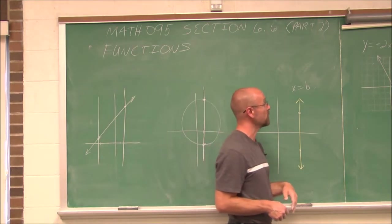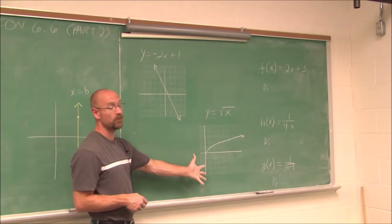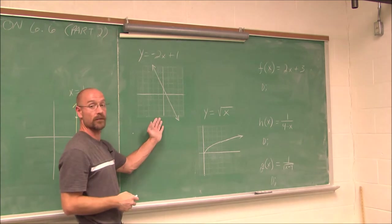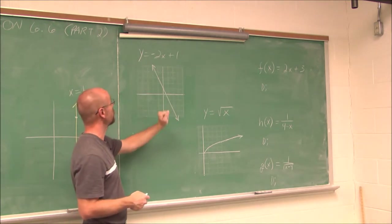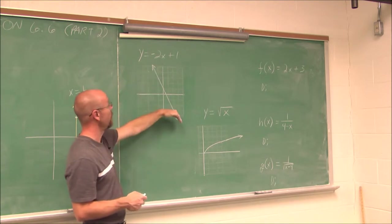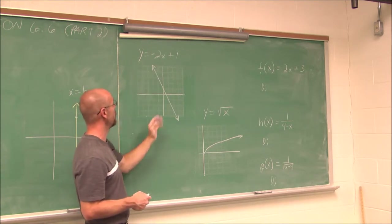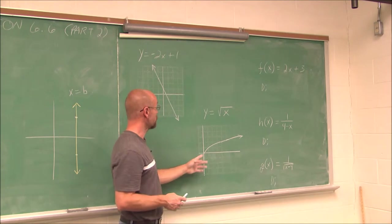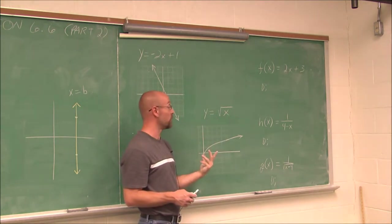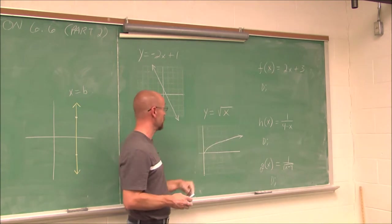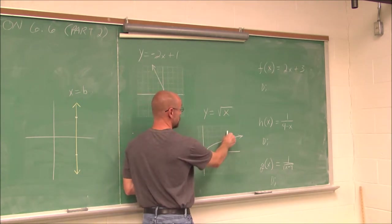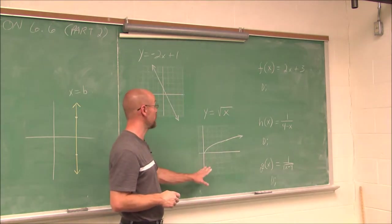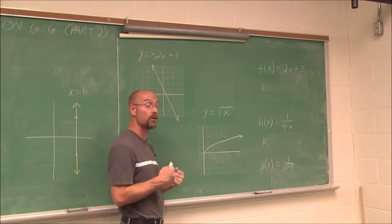Let's look at a couple of graphs. The first thing we want to do is determine: are these functions? If I use a vertical line no matter where I place it for this graph, it only intersects it once, no matter where I place it. So this is a function — all lines except the vertical line are functions. What about this other graph? We may not have seen it before, but hopefully we're familiar with square roots. Using the vertical line, it only intersects at one place no matter where I put it. So this, too, is a function. Both of these passed our vertical line test.